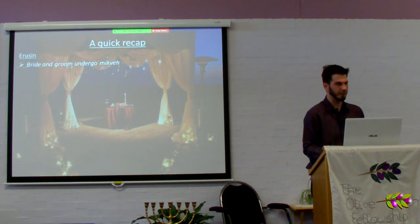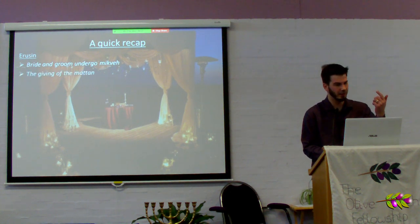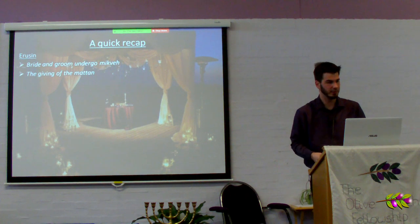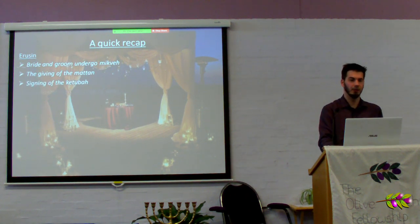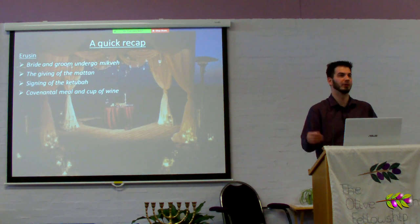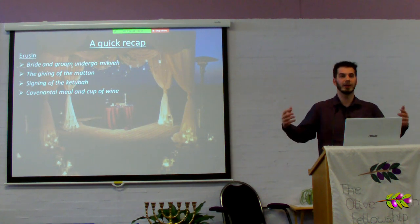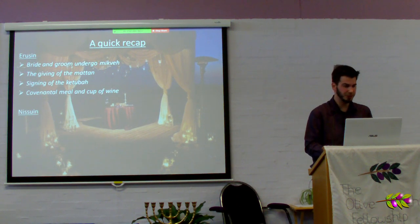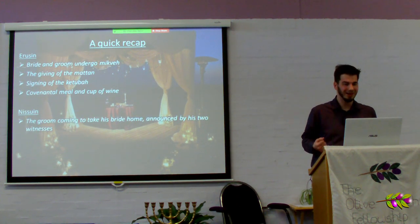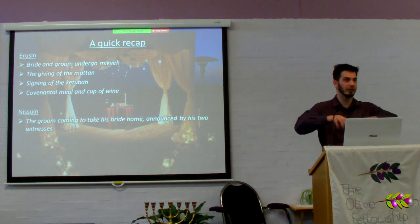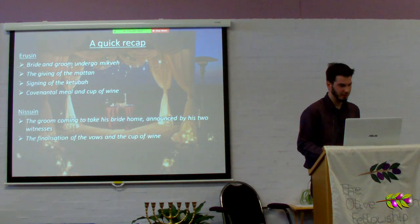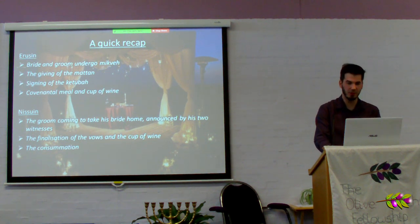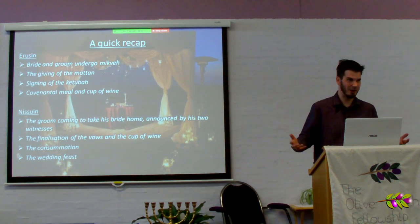So: Erosin recap. Bride and groom undergo mikvah, giving of the gift from the groom to the bride, the signing of the Ketubah, and the covenantal meal and cup of wine to say 'we are now betrothed to one another.' And then at the marriage there was the groom coming to take his bride home, announced by his two witnesses and great shouts and shofars, finalization of the vows, the cup of wine, then the consummation, and then the wedding feast.